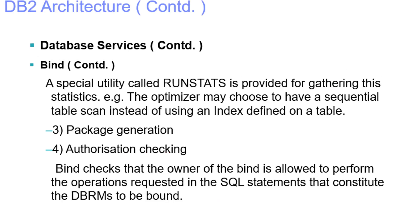During optimization, the bind optimizer chooses the optimum access path based on database statistics stored in various catalog tables. RUNSTATS is a special utility provided for gathering these statistics — for example, the optimizer may choose a sequential table scan instead of using an index defined on the table.